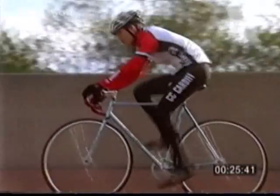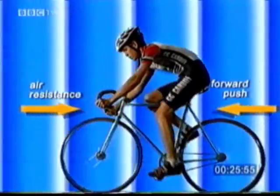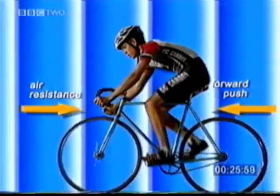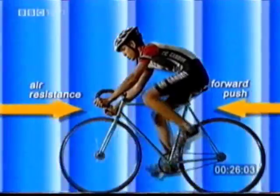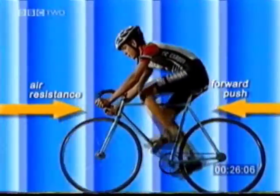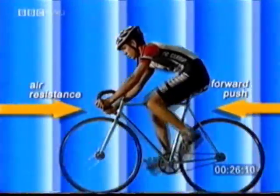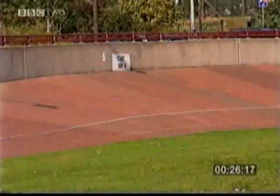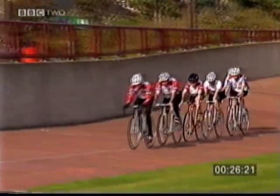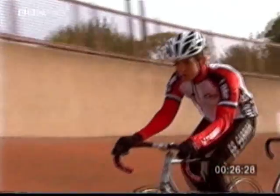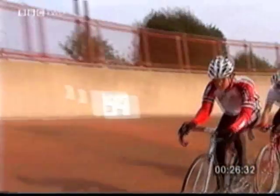Moving objects have to push their way through air, and they experience a frictional force against them called air resistance or drag. When an object moves through the air slowly, it experiences a small amount of air resistance. As it gets faster, the air resistance exerted on it gets bigger. Cyclists try to present a smaller surface area by ducking down and reducing the force exerted on them. Cyclists also slipstream behind another cyclist who deflects the air and reduces the air resistance for those travelling behind. The leading cyclist has to work much harder to overcome the frictional force of air resistance.